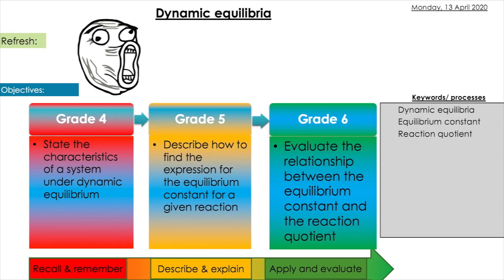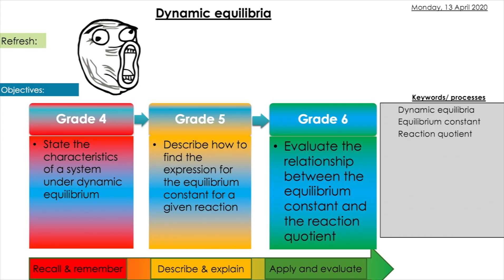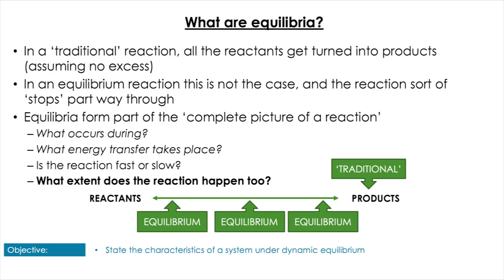Let's have a look at what we're going to do today. We're going to introduce the term dynamic equilibrium, which is going to be key to understanding the rest of this unit. We're going to describe how we can find the expression for the equilibrium constant for each given reaction, and we're going to evaluate the relationship between the equilibrium constant and the reaction quotient.